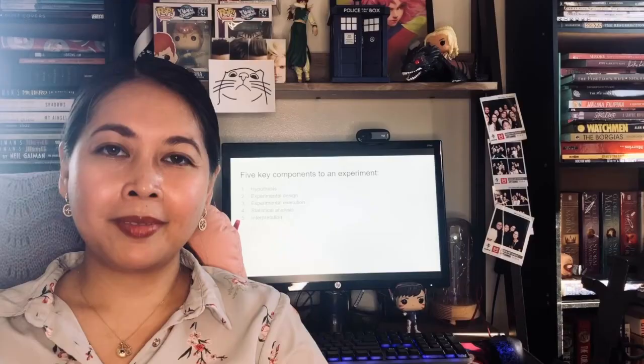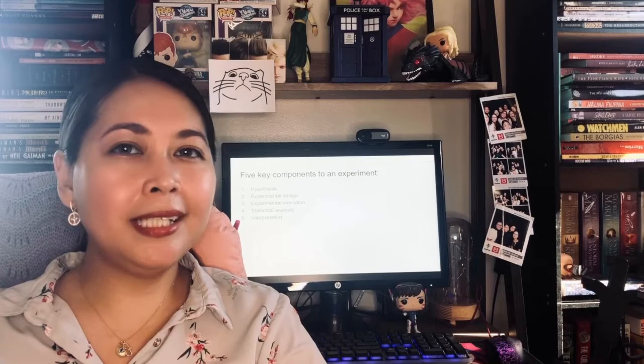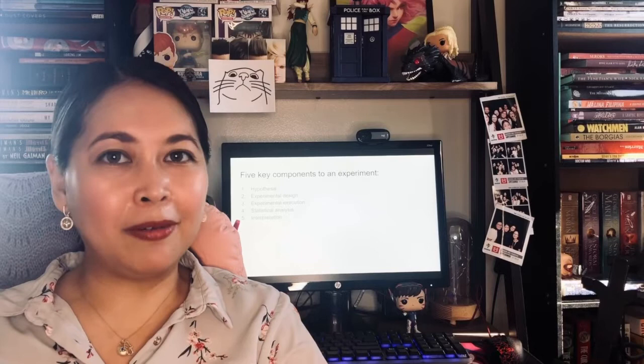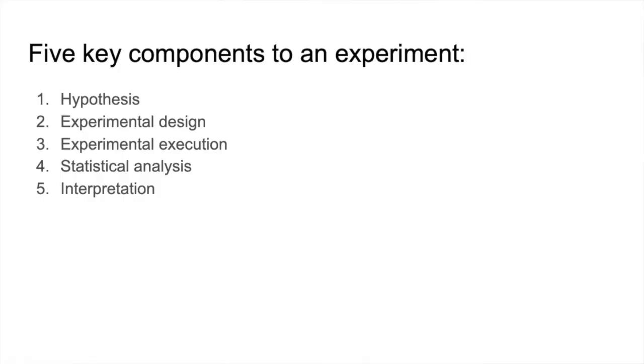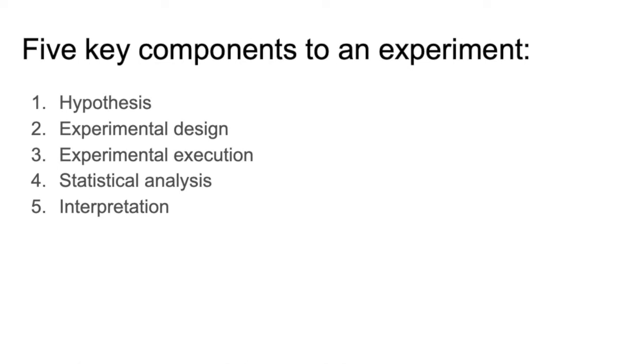A common misconception about writing the methodology is that it's just as simple as paraphrasing published methods or protocols in manuals. But to be precise, in order for you to write a good methodology, you have to factor in the five key components of a good experiment. Those are the hypothesis, the experimental design, the experimental execution, statistical analysis, and interpretation.